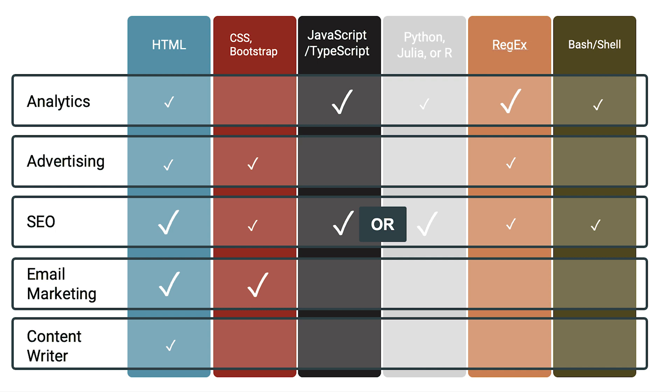The table I'm about to show on screen will diagram out the coding skills or languages that map really nicely to different roles on a digital marketing team. You'll see the skills I consider basically necessary with a big check mark, and ones that are recommended or nice to have with a smaller check mark. You can probably get by without them, but they'll come in handy down the road.